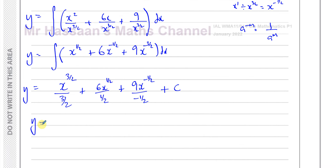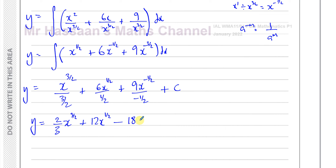Now let's simplify. Dividing by a fraction means multiplying by its reciprocal. So x to the power of 3 over 2 divided by 3 over 2 gives 2 thirds x to the power of 3 over 2. 6 divided by a half is 6 times 2 which is 12, giving 12x to the power of a half. Positive divided by negative is negative, and 9 divided by a half is 9 times 2 which is 18, giving minus 18x to the power of negative a half plus c. We've got the right form — we just have to find the value of c.